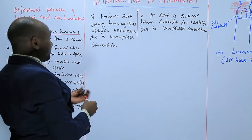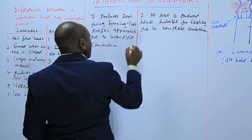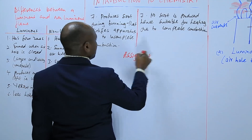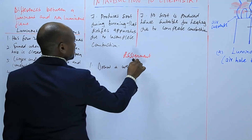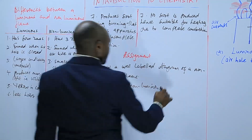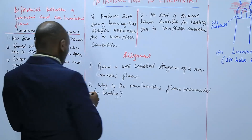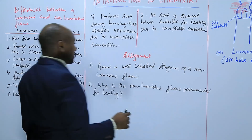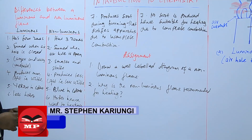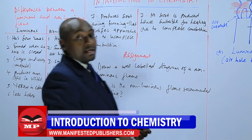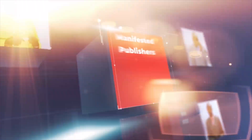So basically those are the differences between the luminous and the non-luminous flame. We'll have an assignment. The first question: draw a labeled diagram of a non-luminous flame. Number two: why is the non-luminous flame recommended for heating? So until next time, goodbye.